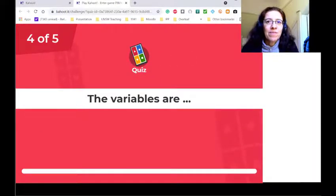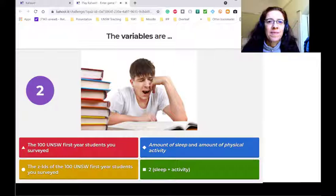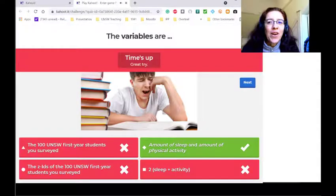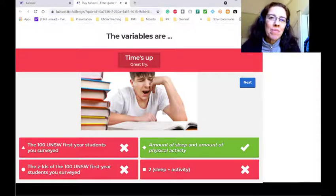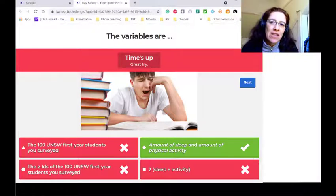What are the variables? Please write it down, or it's going to be boring. OK, so a little bit like with sample and sample size, the variable, it's not two, it's what you're looking at, what you're actually looking at, so you're interested in the amount of sleep and in the amount of physical activity. So these are your two variables.